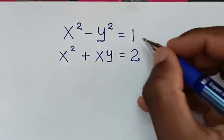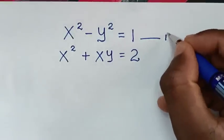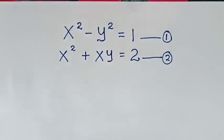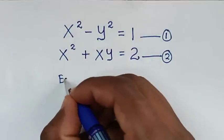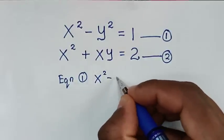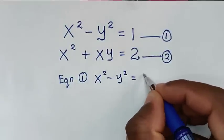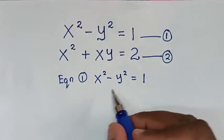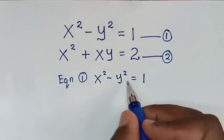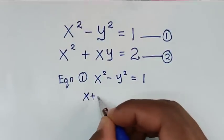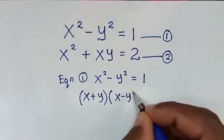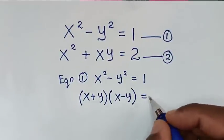In the first step, we let the first equation as equation 1 and the second as equation 2. Then from equation 1, which is x squared minus y squared equal to 1, the left side x squared minus y squared is in the form of a difference of squares. So this is the same as (x + y)(x - y) = 1. We let this as equation 3.